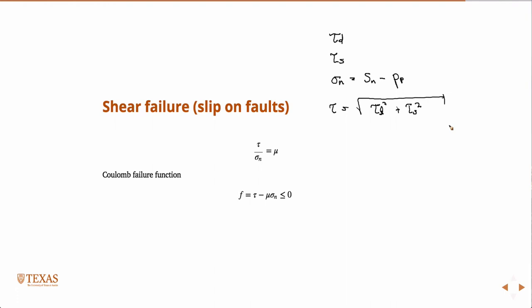Your equation to determine if a fault will slip or not is this equation — and this is at the instant of slip. Another way to write it is as an inequality. Because this term can never really be positive; if it were positive, you'd have some type of material separation. If it's sliding, they're still in contact — just sliding along with one another. Strictly, the equation with the equal sign is at the instant of slip.